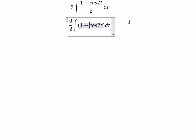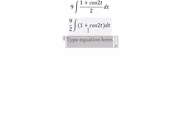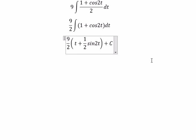And now we can get the final answer. The integral of number 1, we got t. The integral of cosine 2t, you get 1 over 2 sine 2t, and it is plus constant.